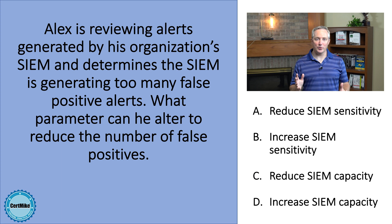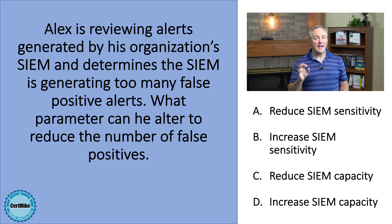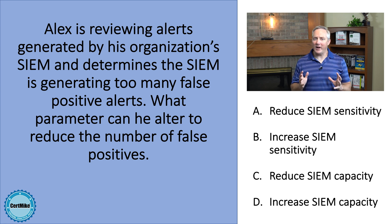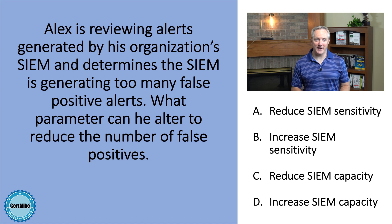Alex is reviewing alerts generated by his organization's SIEM, and he determines that the SIEM is generating too many false positive alerts. What parameter can Alex alter to reduce the number of false positives?